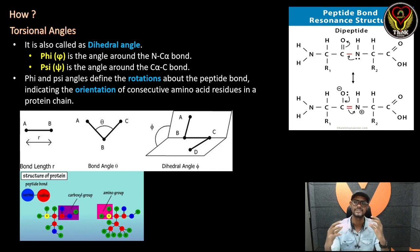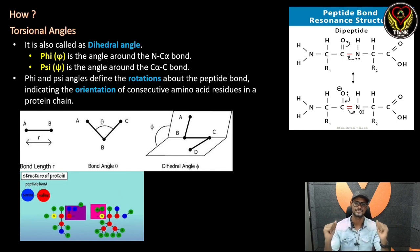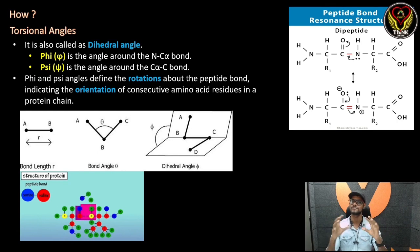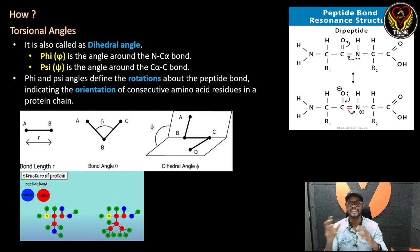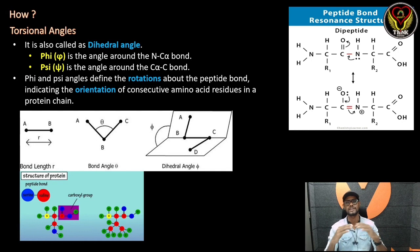What is the torsional angle? It is easy — it is a dihedral angle. What do you call a dihedral angle? It is a dihedral angle.